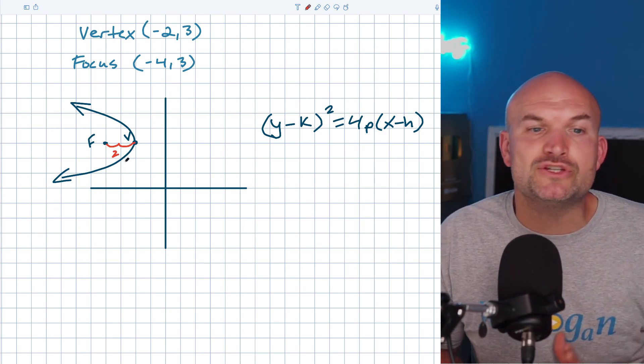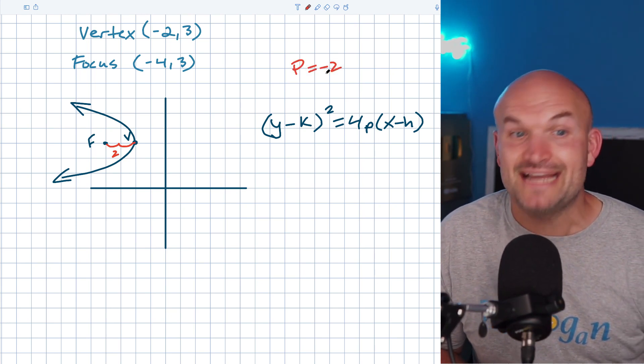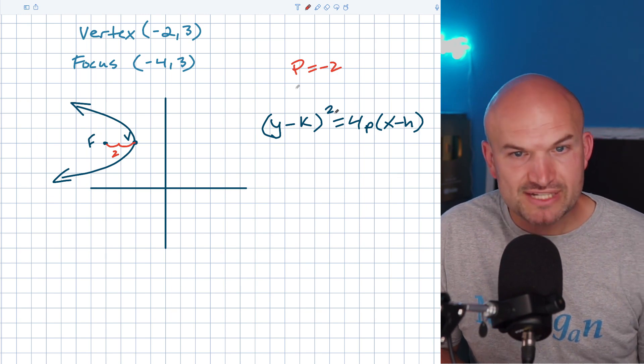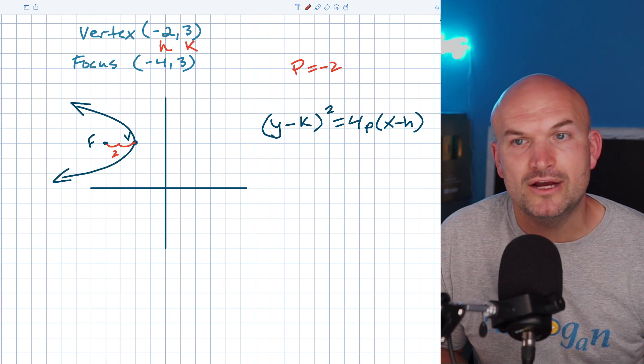But distance and direction are important here. We're going to the left. So my P in this case is actually going to be a negative two. And also remember that the vertex here is going to be your H and your K.